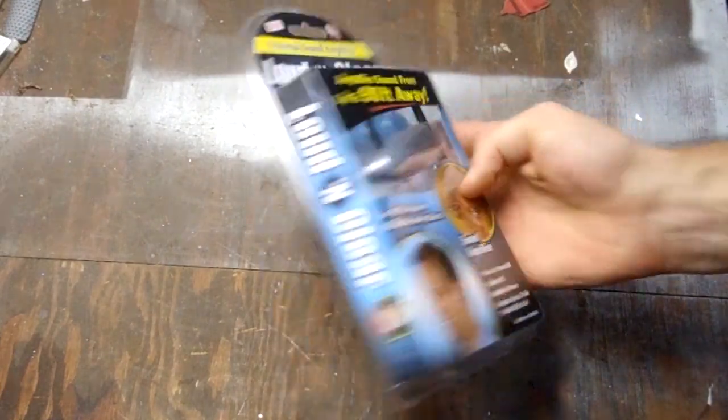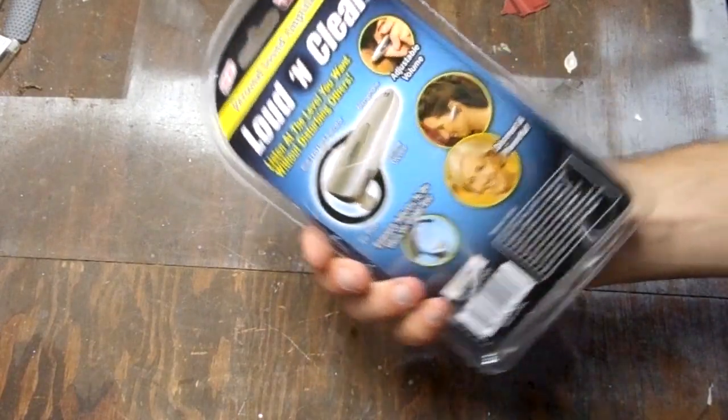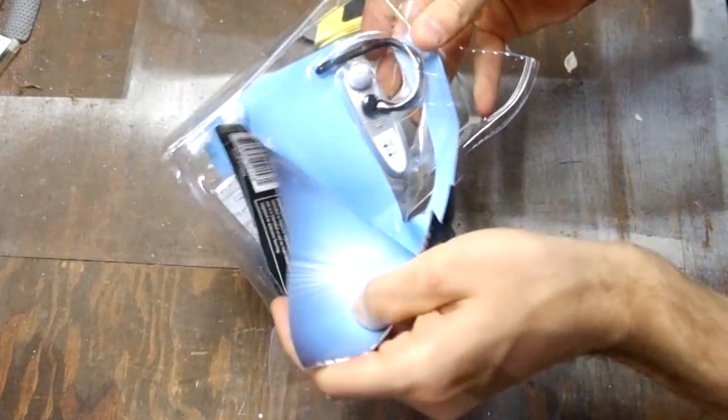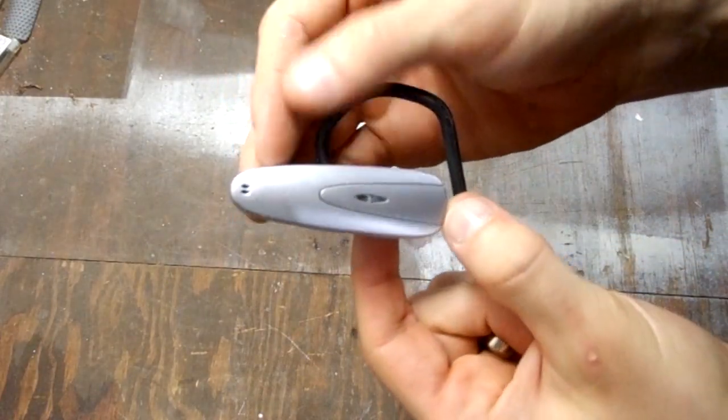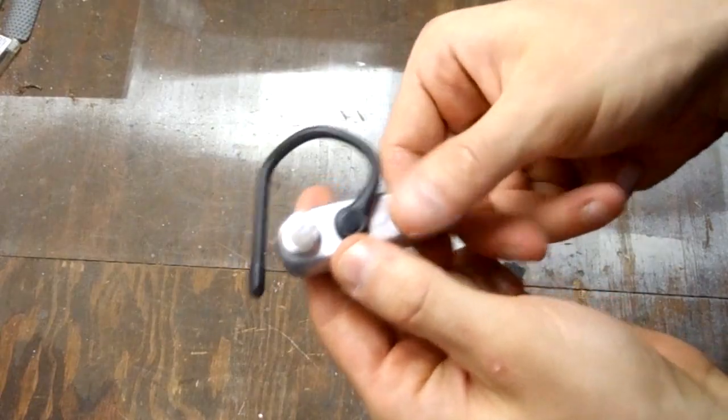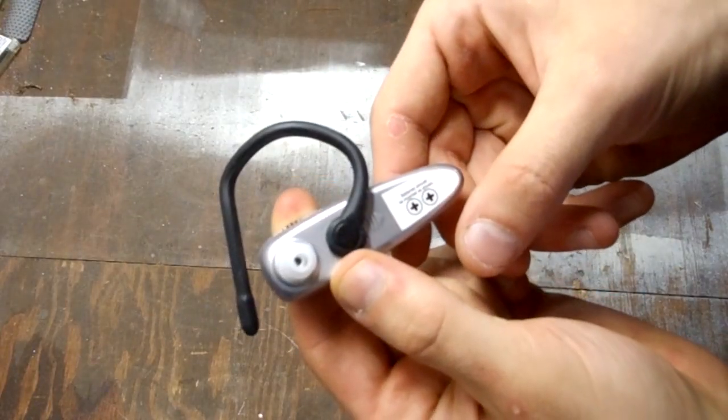I bought this little amplifier from my local electronics store. Let's go ahead and open it up. Here's what it looks like. There's a microphone on the front, and speaker on the back. Speaker's supposed to go into your ear. This thing lets you hear better.